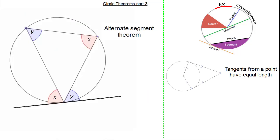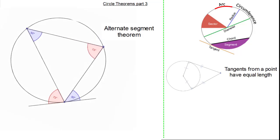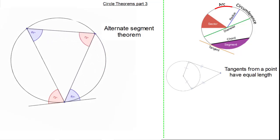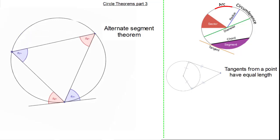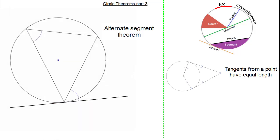Now let's look at our last circle theorem: the alternate segment theorem. This means that the angles in the alternate segments are the same. You can see how the angles are colour coded to show the equal angles in the alternate segment. As the angle at the circumference changes, the angle in the alternate segments will always remain the same. So let's look at the proof, proving why the alternate segment angles are equal.